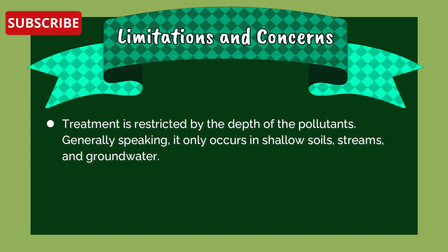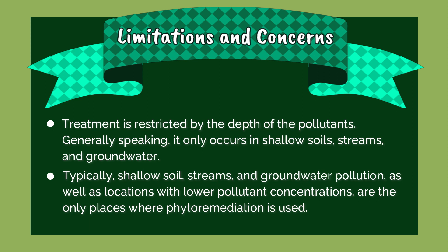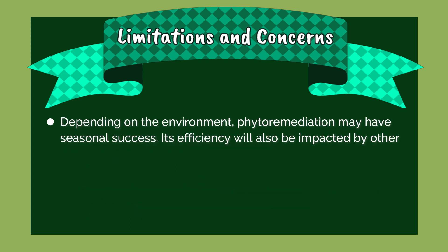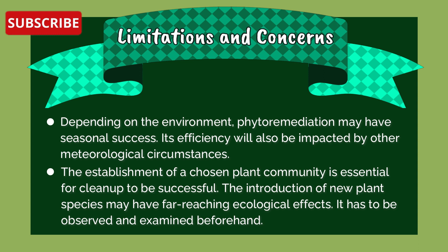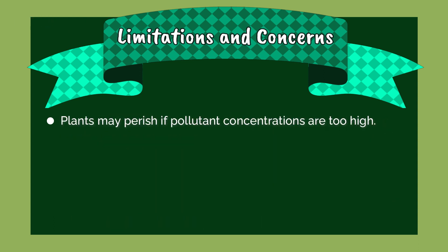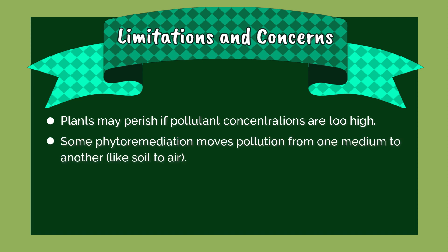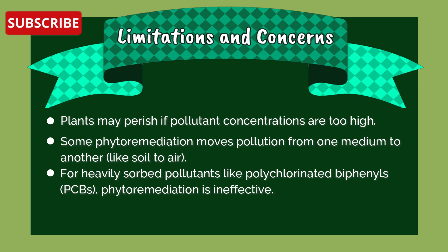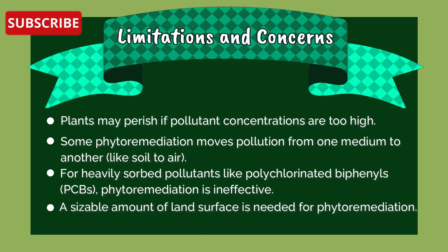Treatment is restricted by the depth of pollutants — it generally only occurs in shallow soils, streams, and groundwater. Phytoremediation may be seasonal in its success, and its efficiency is impacted by meteorological circumstances. The establishment of a selected plant community is essential for cleanup to be successful, and the introduction of new plant species may have far-reaching ecological effects. Plants may die if pollutant concentrations are too high. Some phytoremediation moves pollution from one medium to another, such as soil to air. For heavily sorbed pollutants like polychlorinated biphenyls (PCBs), phytoremediation is ineffective. A sizable amount of land surface is needed for phytoremediation.